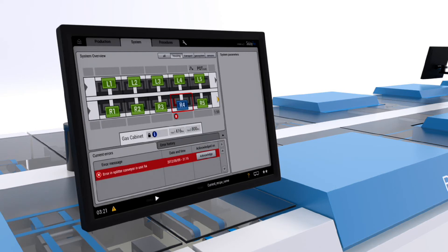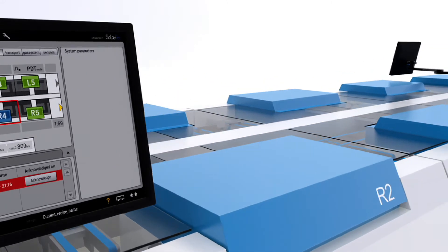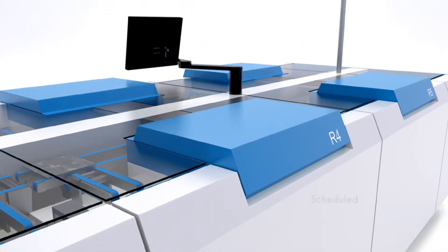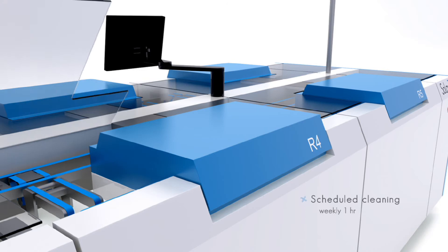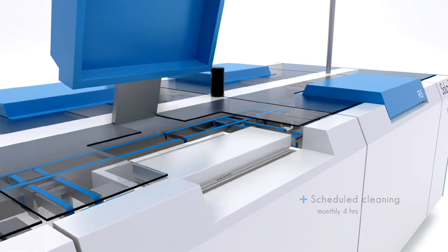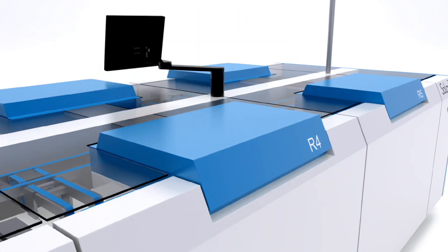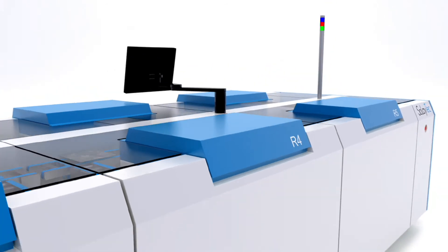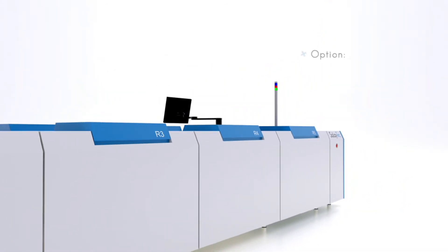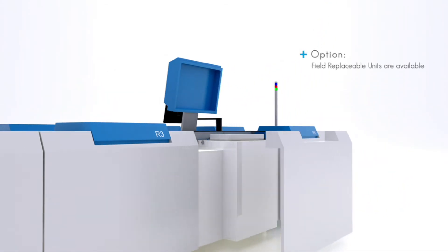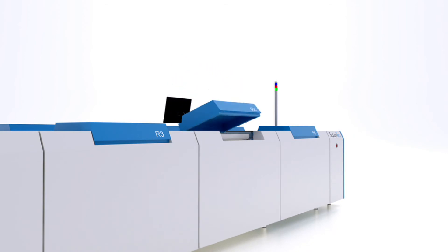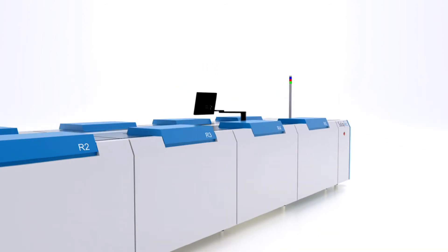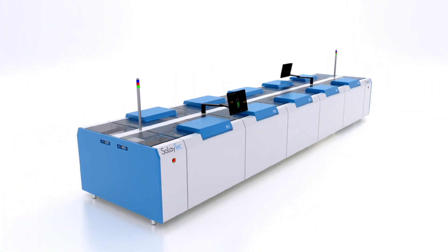If any problems occur in the system, the operator is notified via the user interface. And if one of the deposition units fails or is undergoing scheduled maintenance, the other nine deposition units continue production. In case a problem cannot be fixed on site, it is possible to simply exchange that deposition unit. This means that the tool will be up and running again at 100% capacity in a very short time.